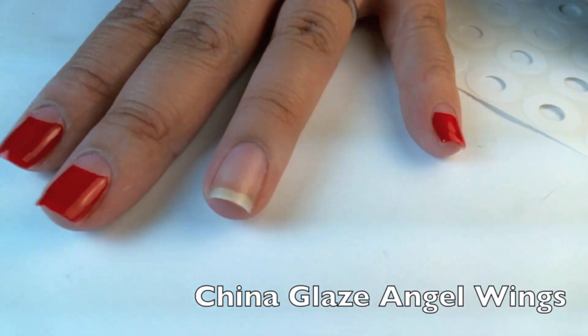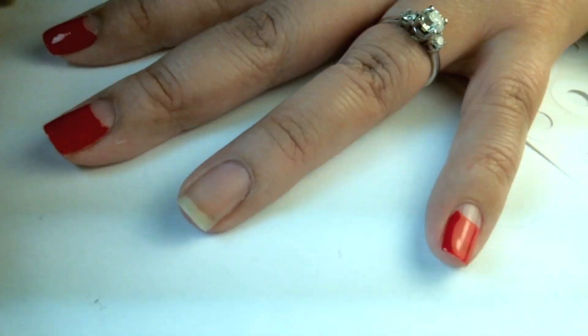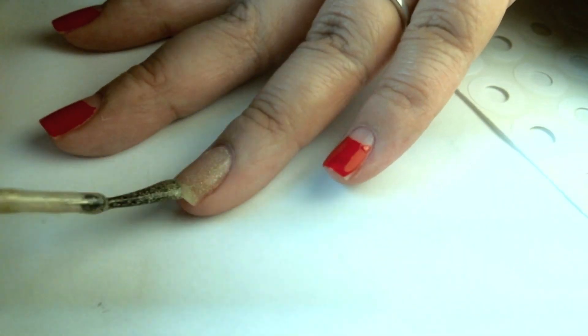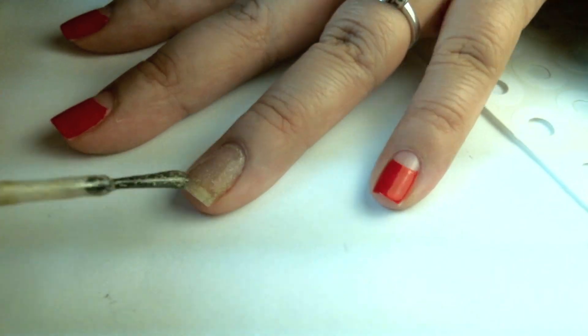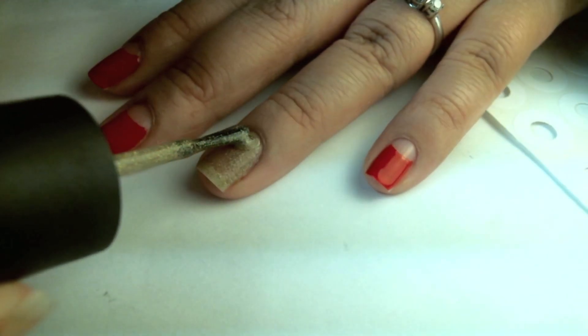Alright, for my accent nail I'm going to use China Glaze Angel Wings. And between each layer I let it dry. But I did a fast forward. So I did three coats.